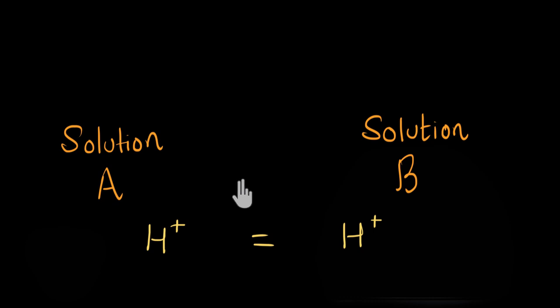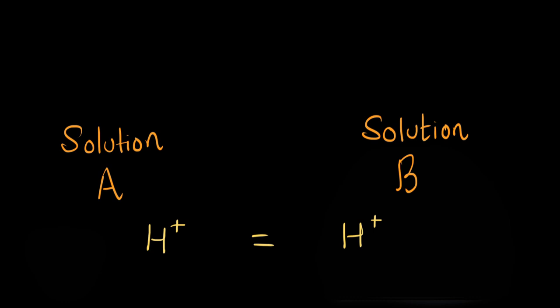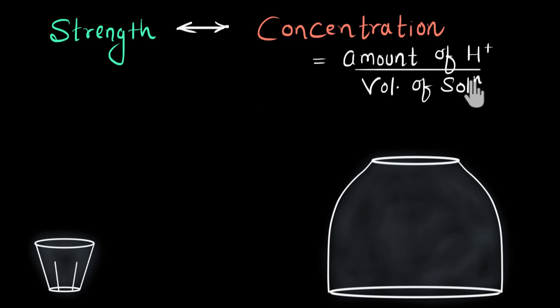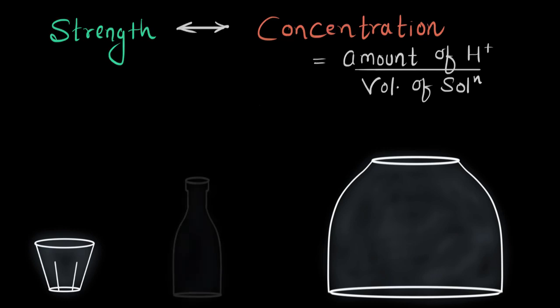If we have two solutions which have the same amount of H+ ions in them, do you think that their acidic strength is going to be the same? Well, that will also depend on the volume of the solutions in which the H+ ions are dissolved. That's what we are going to talk about in this video — how does the strength of a solution depend on the concentration of the solution? By concentration, I mean the amount of H+ ion in a given volume of solution. Let's begin with an example of acidic solution, and then we'll come to basic solution.